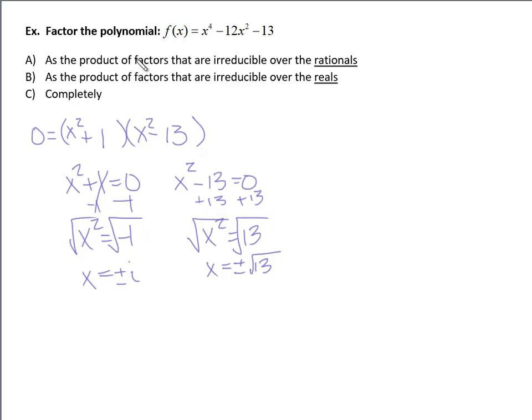So we go back to a. It wants the product of factors that are irreducible over rational numbers. Well if I rewrote my factors with root 13 and negative root 13. Those are irrational. So I don't want that. That means I want to keep this as x squared minus 13. Because 13 is a rational number. Or negative 13. I also don't want imaginaries. Because rational numbers are real. So we're going to have to go back and leave it as this factor. x squared plus 1. So in fact. This is as far as you can factor it. And keep it over the set of rational numbers. So this would be the answer for a. It's just x squared plus 1 times x squared minus 13.